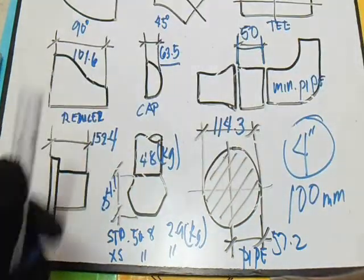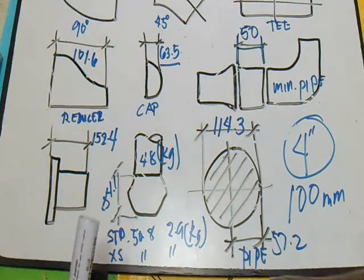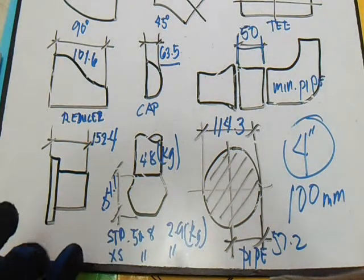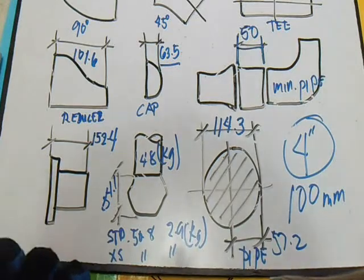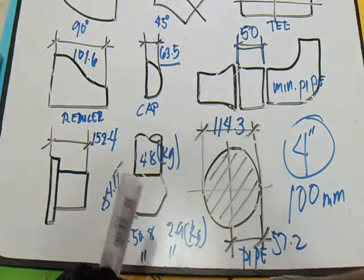This is the weld-o-let, which depends on the thickness. There are different thickness and different dimensions and different weights.